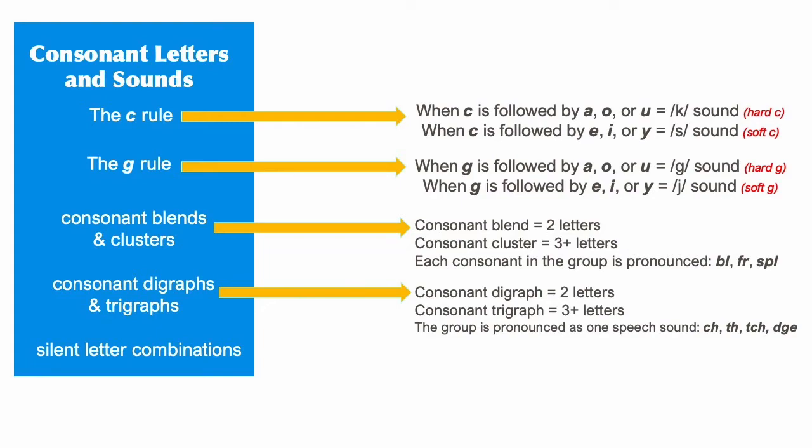Two consonants together that make this kind of sound, like CH, are called a consonant digraph. Three or more consonants together that make this kind of sound, like DGE, are called a consonant trigraph.